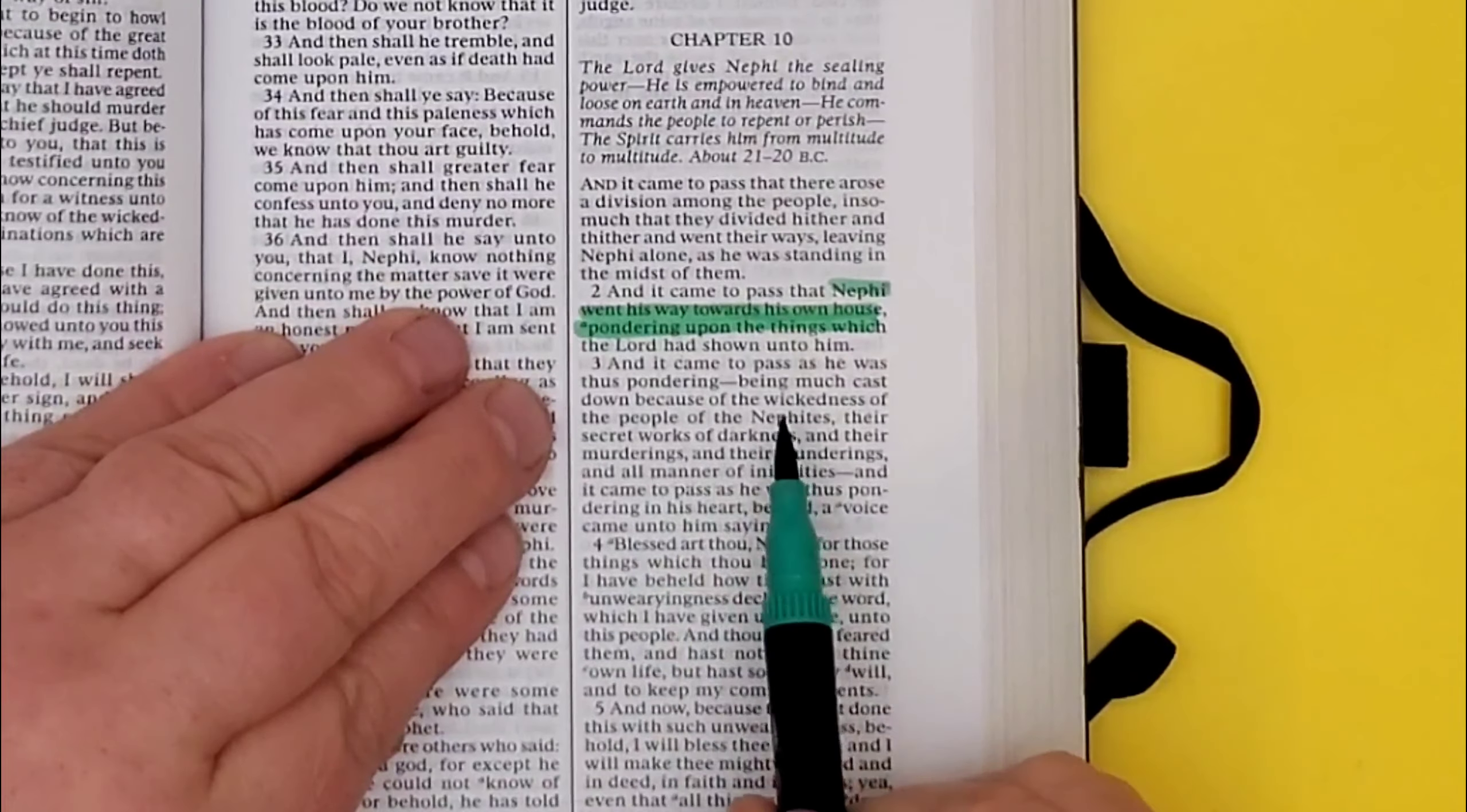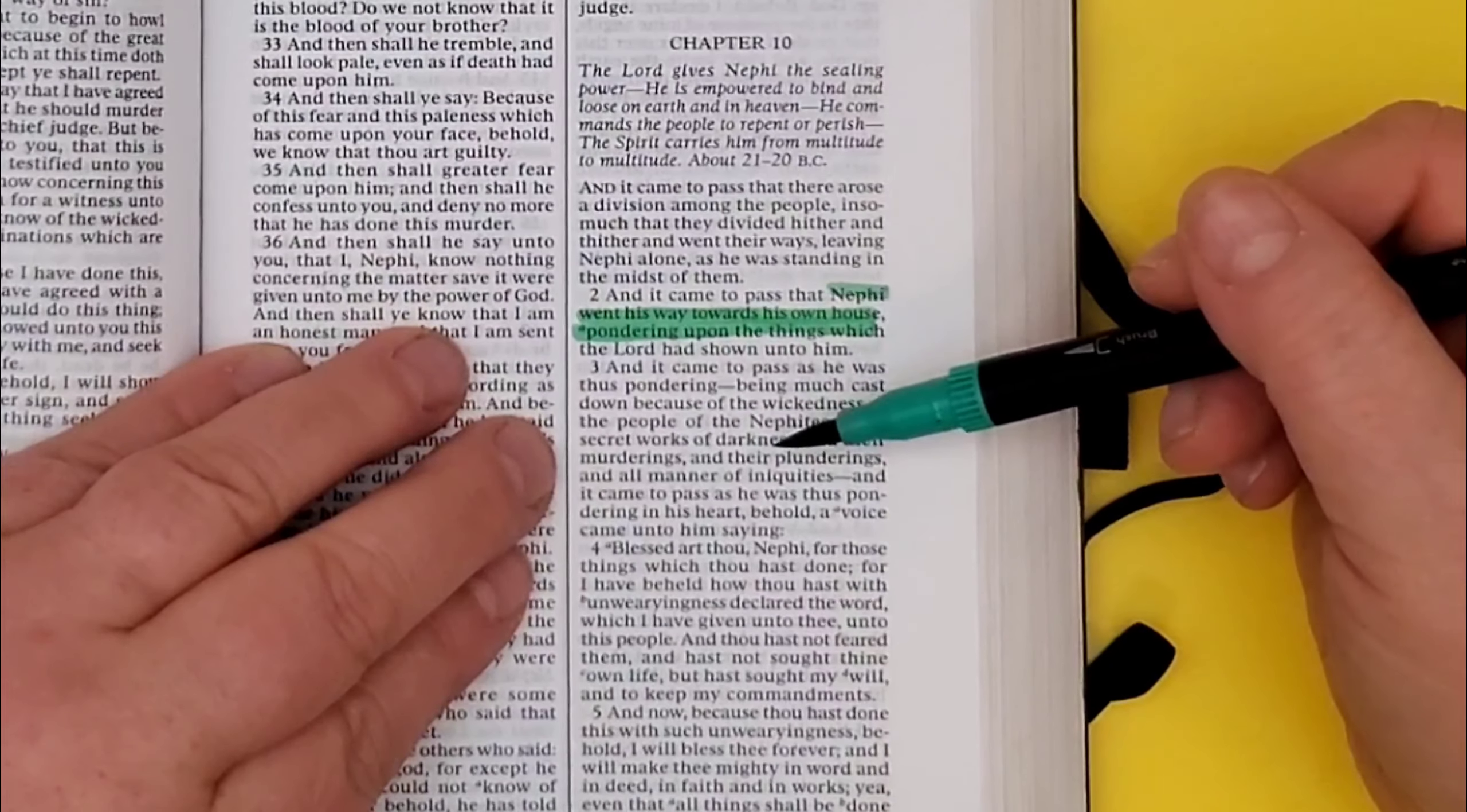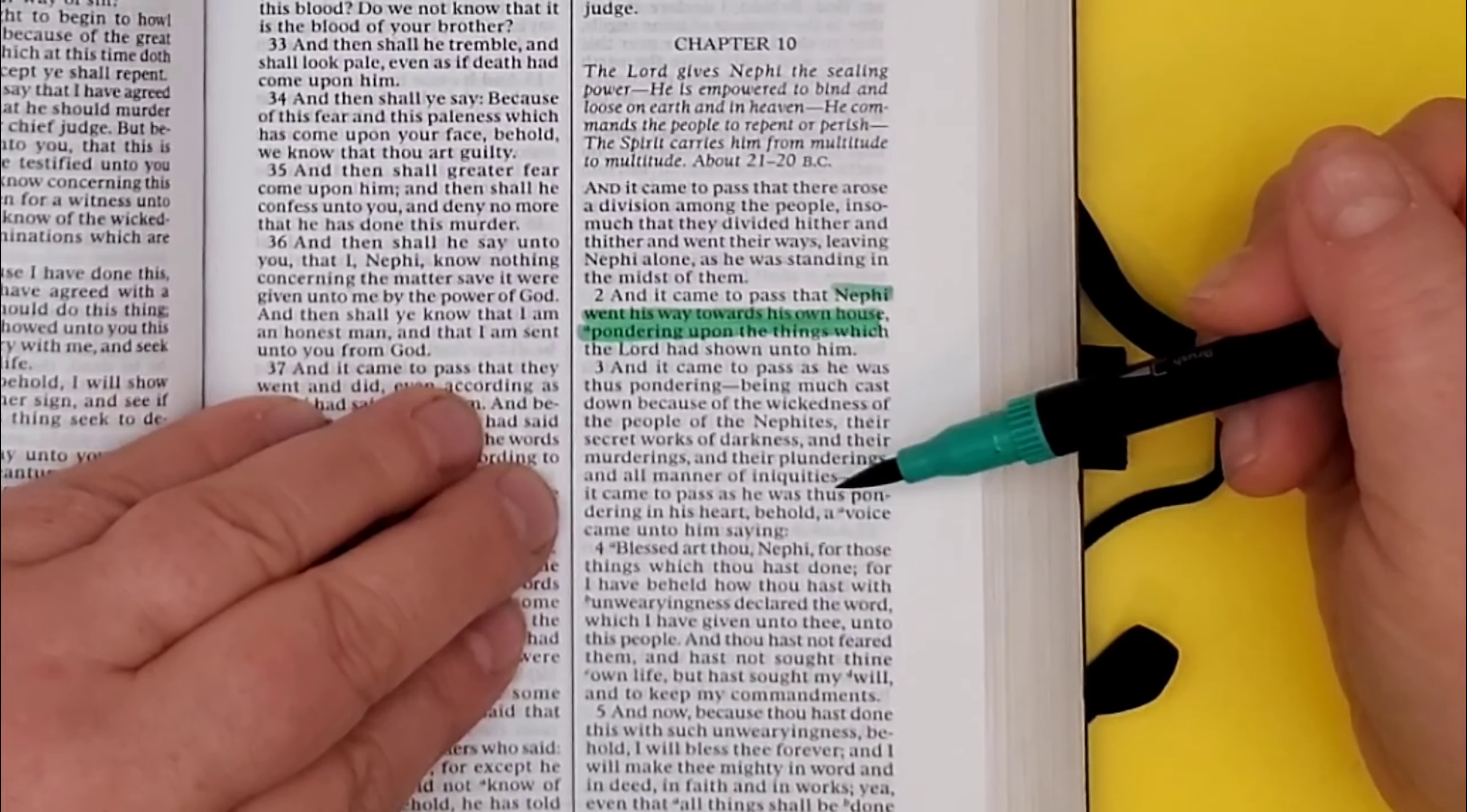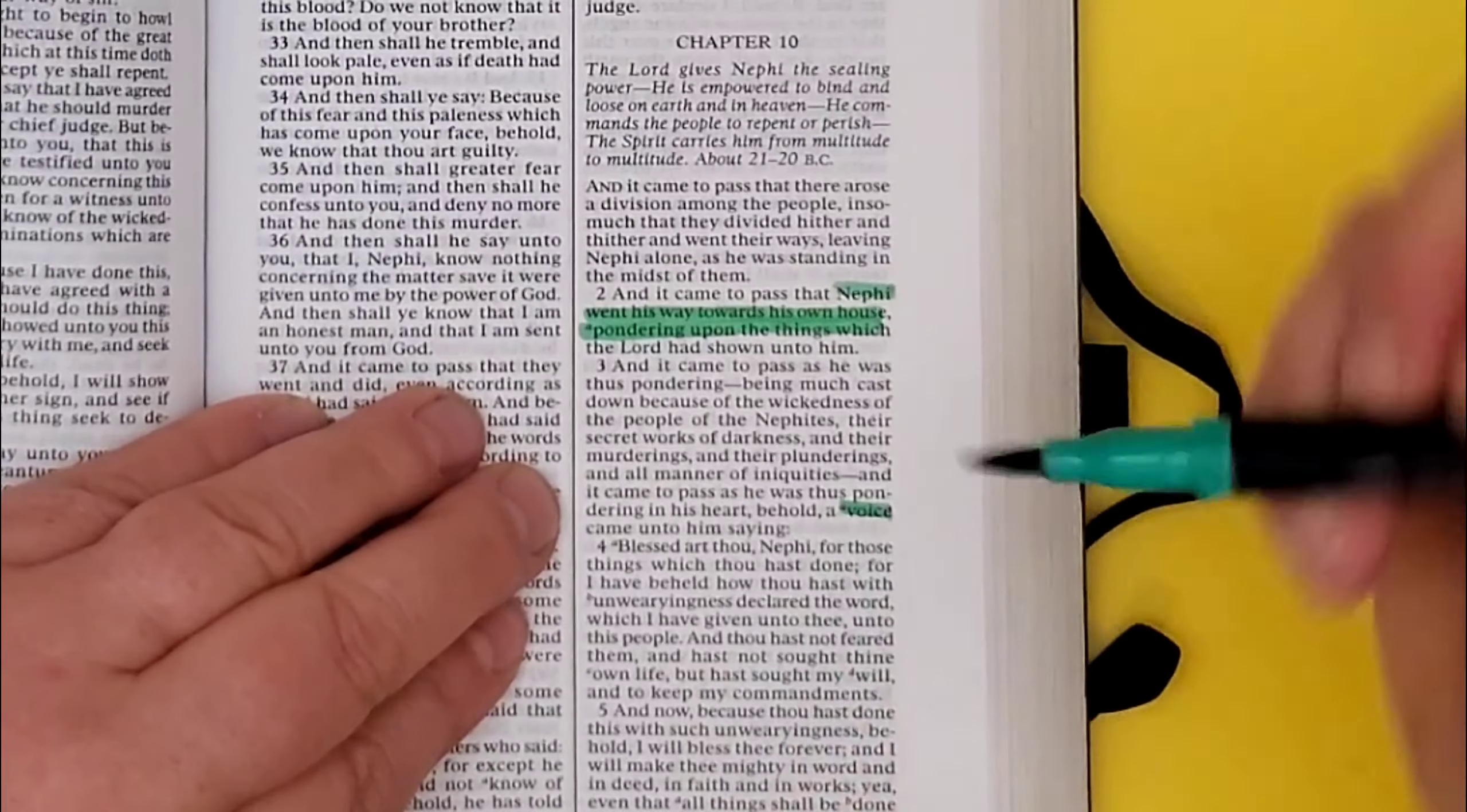So what was he pondering? He had a lot on his mind. There was the wickedness of the Nephites, their secret works of darkness, murderings, plunderings, all manner of iniquity. Wow, that is a lot that he would have on his mind.